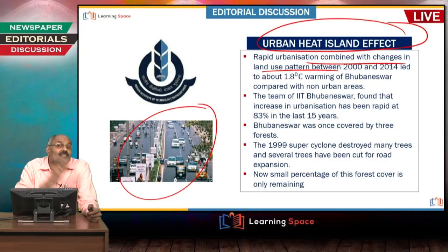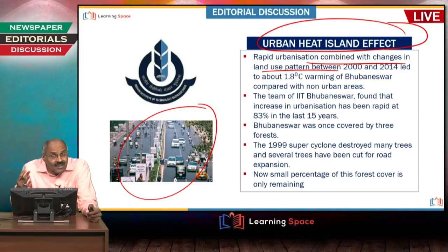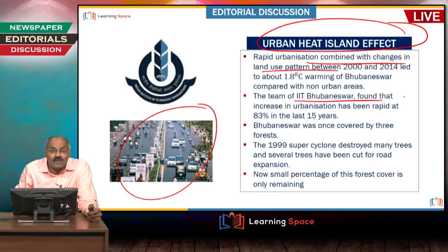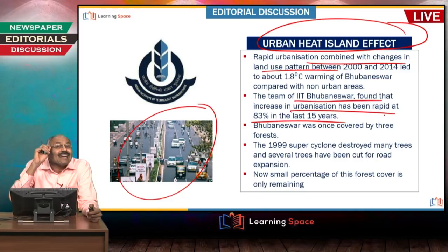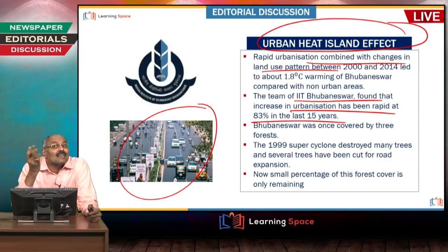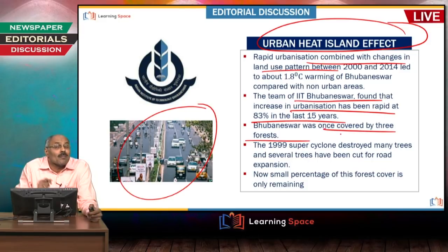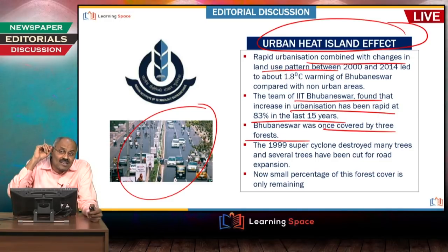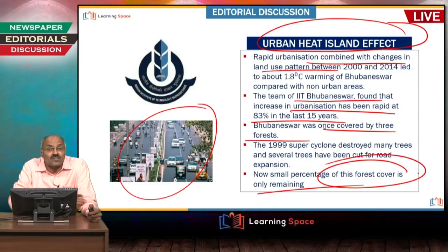This is true for several cities, and cities have to develop green cover — only then can this problem be solved. The team of IIT Bhuvaneshwar found that the increase in urbanization has been rapid at 83% in the last 15 years. Bhuvaneshwar was once covered by forests, but in 1999, the Odisha super cyclone destroyed most of the forest areas, and now only a small percentage of that forest cover remains.